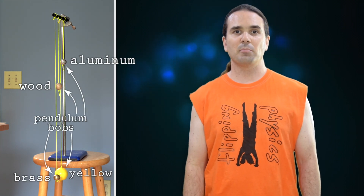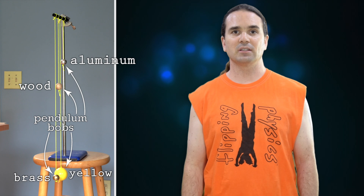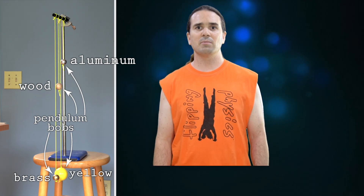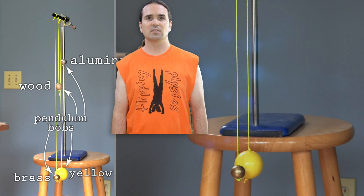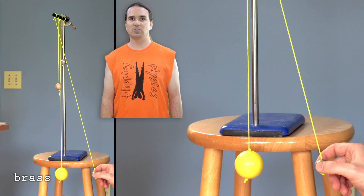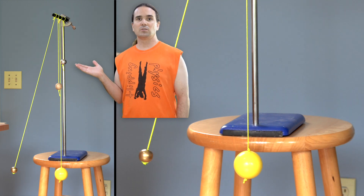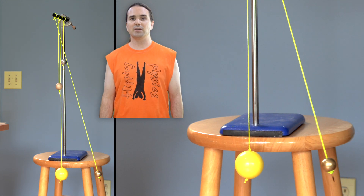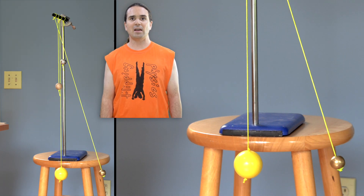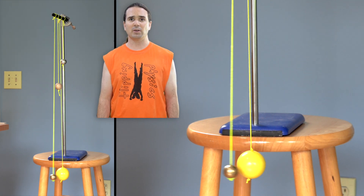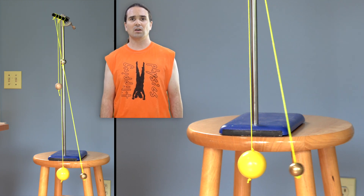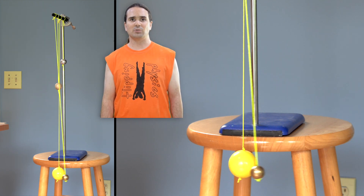Here we have several simple pendulums of different lengths. Currently, they are all pretty much at rest. I begin the demo by setting the brass pendulum in motion. Sympathetic vibrations are when an object begins to oscillate or vibrate because of an external vibration which matches the resonance frequency of the other object.